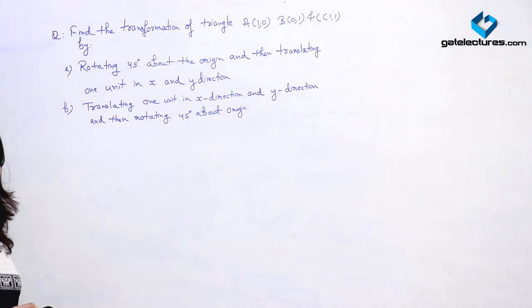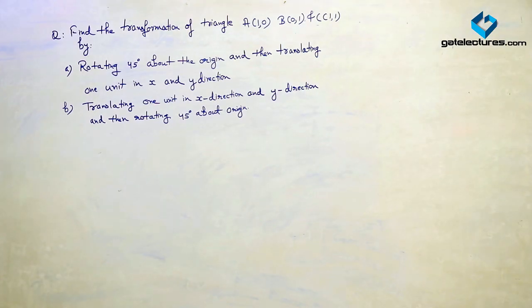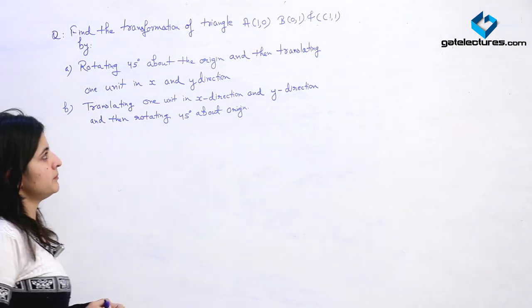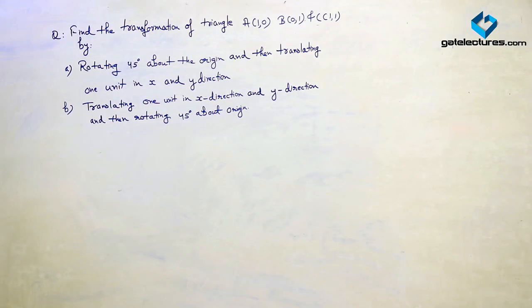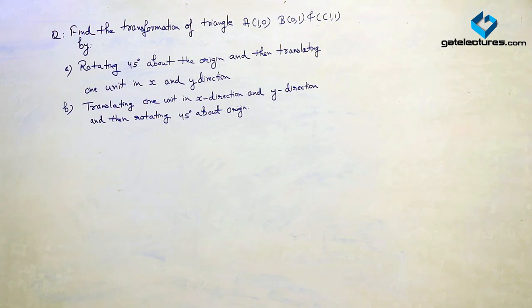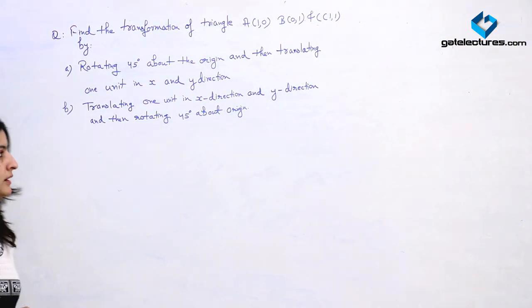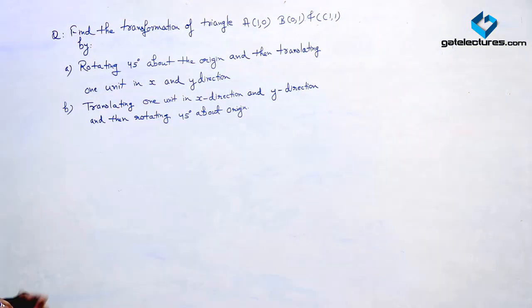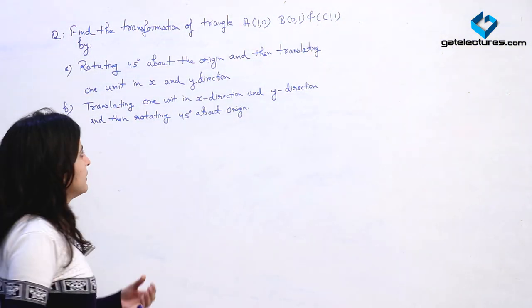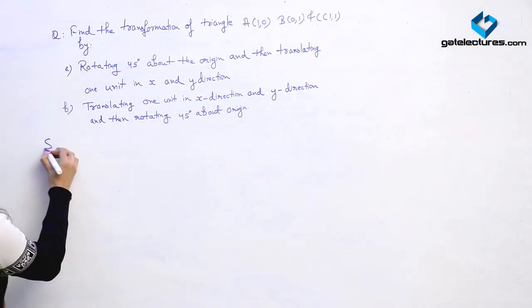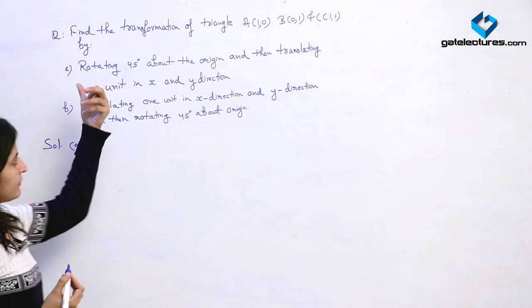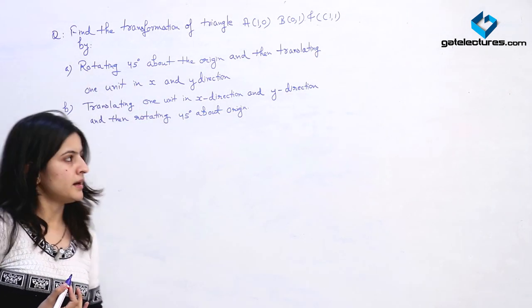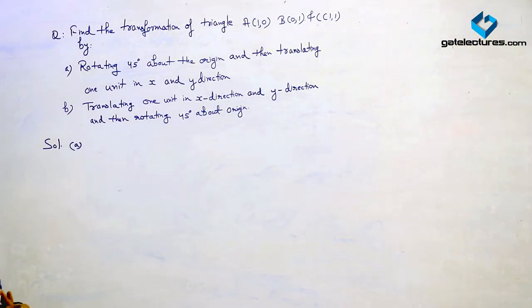Here is the question: find the transformation of a triangle A(1,0), B(0,1), and C(1,1) by first rotating 45 degrees about the origin and then translating 1 unit in the x direction and 1 unit in the y direction. Here we are considering the rotation to be counterclockwise, and I am solving part A.